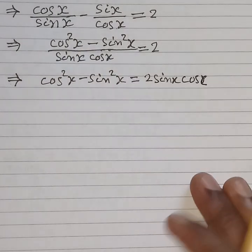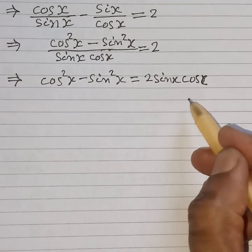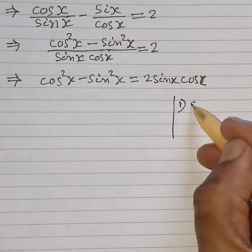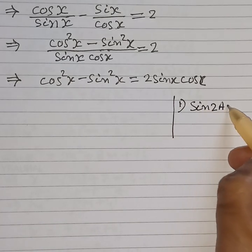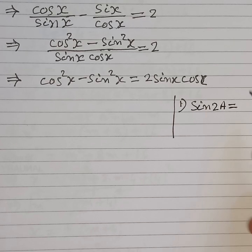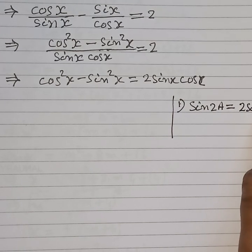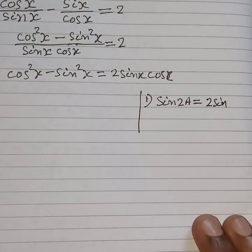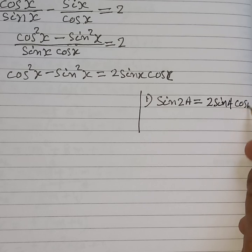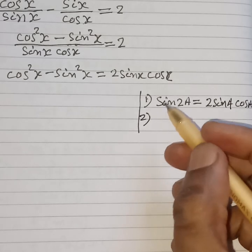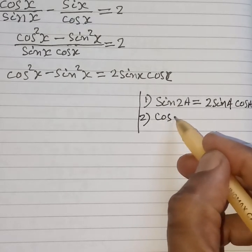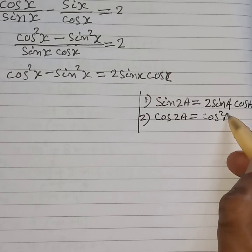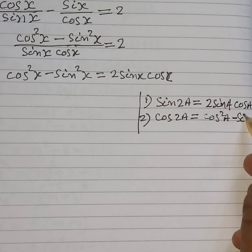Now we apply two identities. Number 1: sin 2a is equal to 2 sin a cos a. Number 2: cos 2a is equal to cos squared a minus sin squared a.